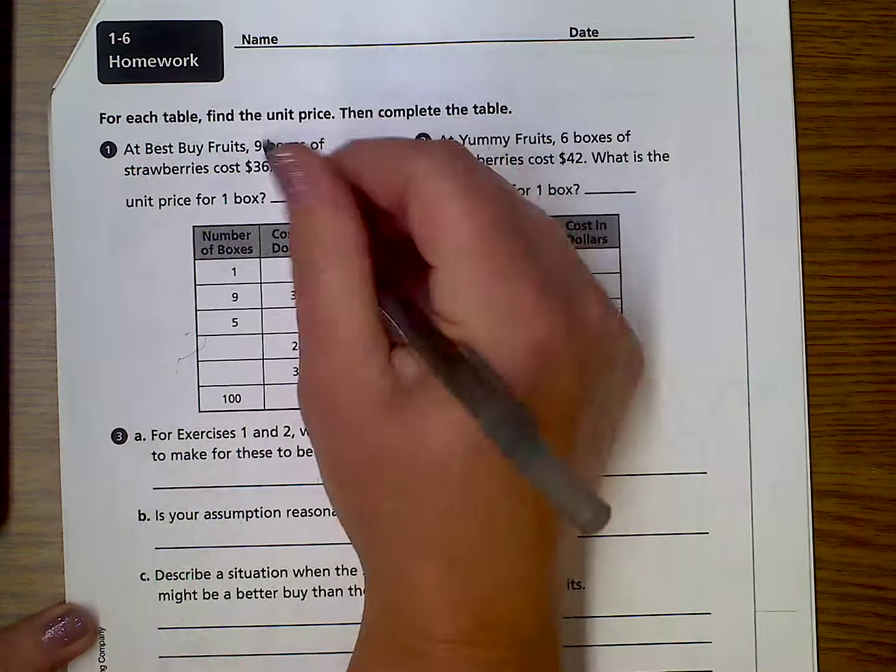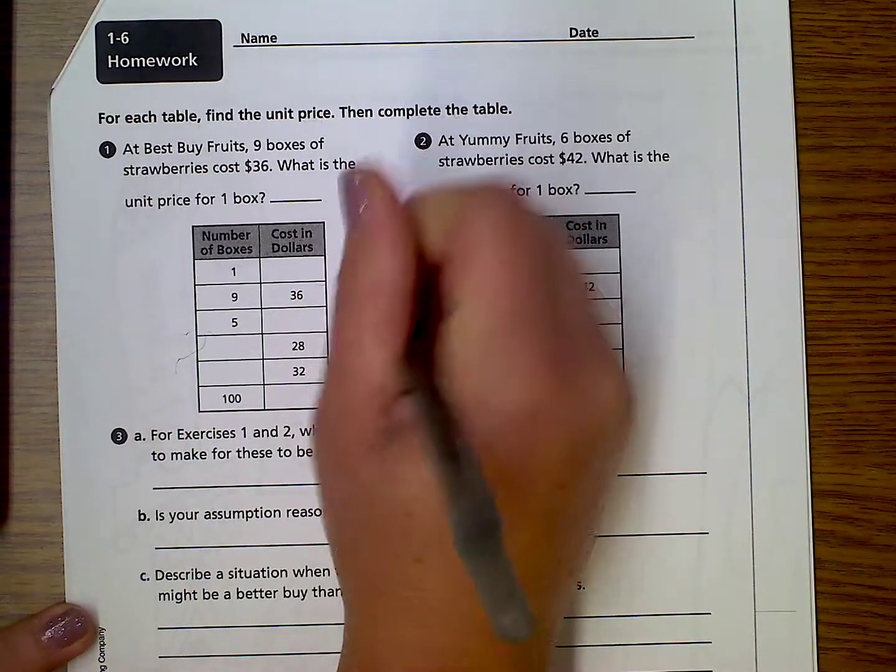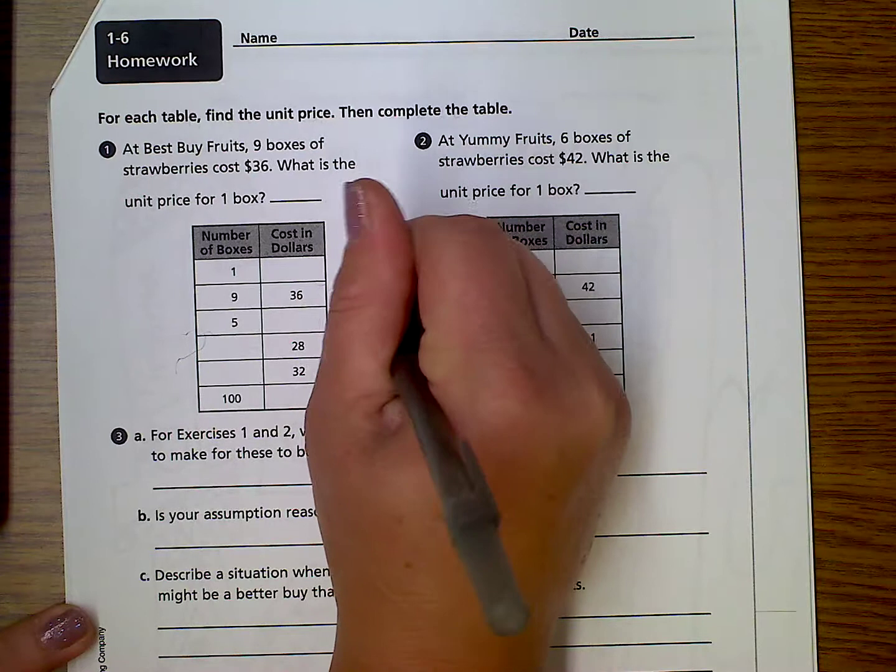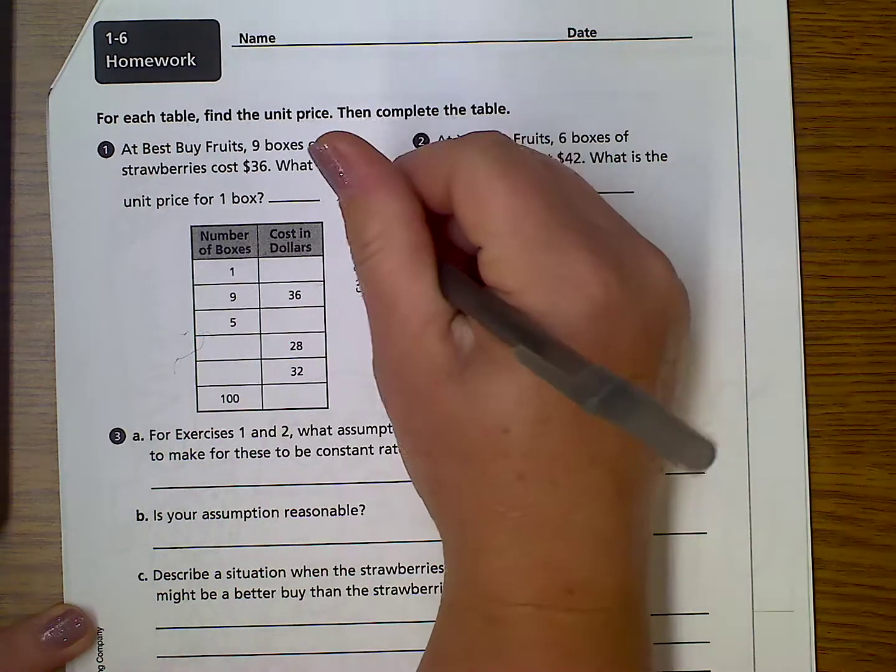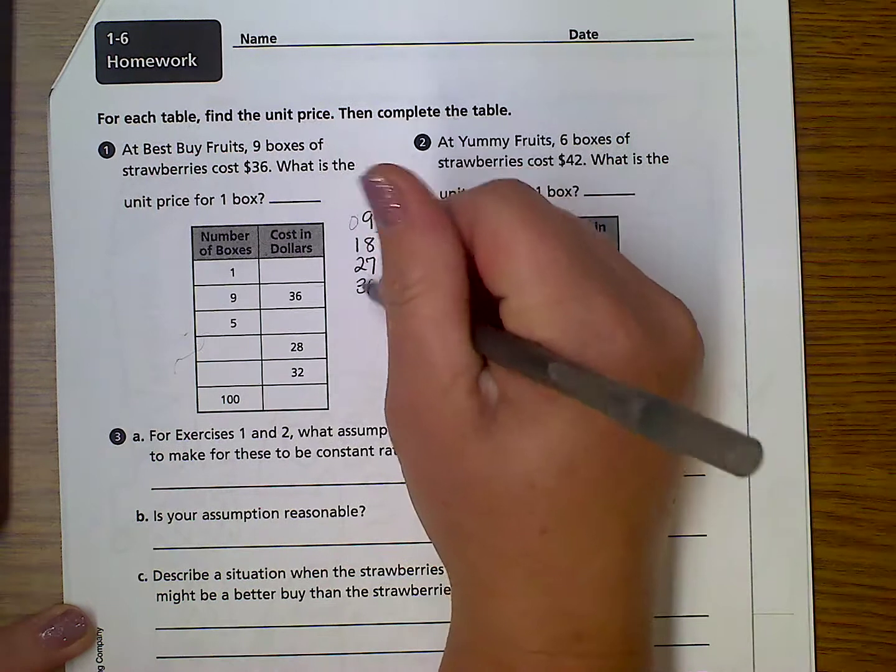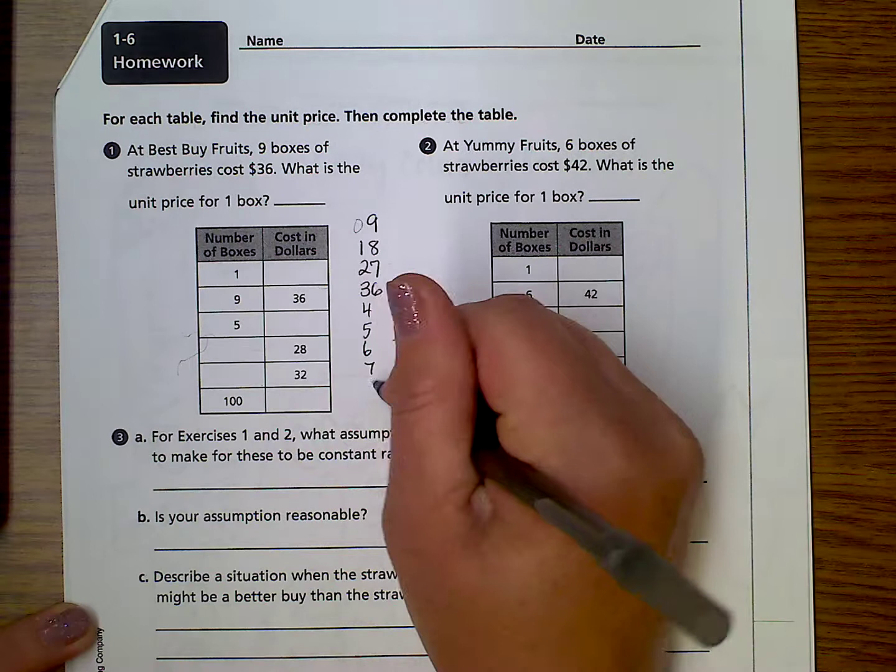So that would be the same as counting by nines to get to 36. 9, 18, 27, 36. And again, I've told this is the nines trick. 1, 2, 3, 4, 5, 6, 7, 8, 9.